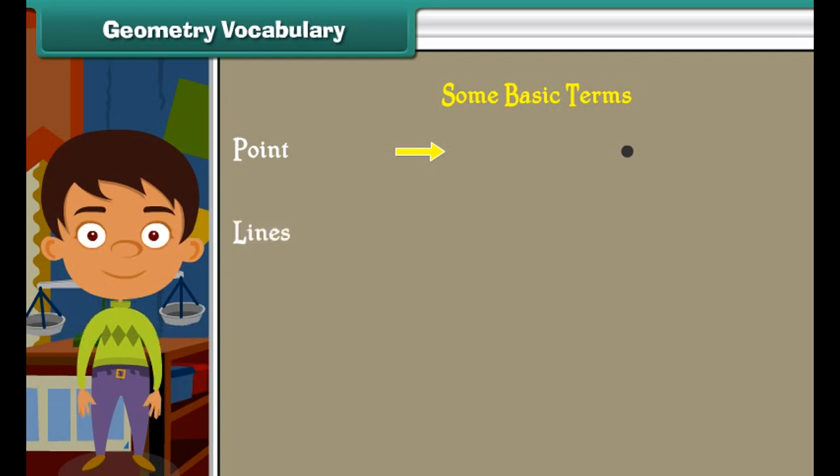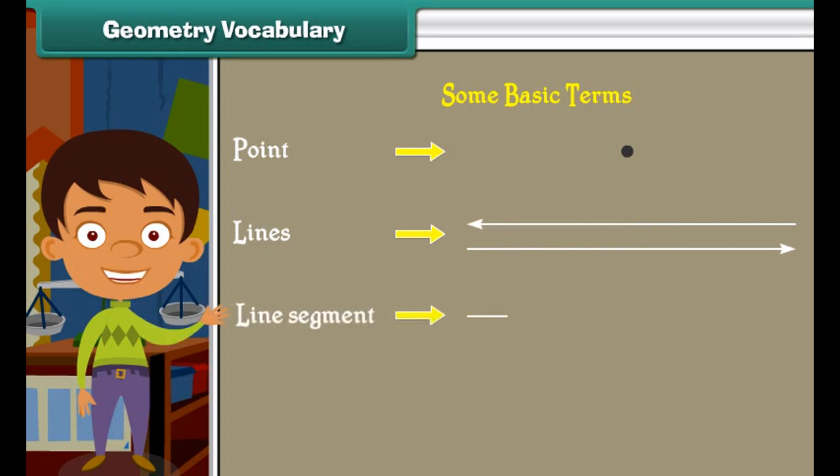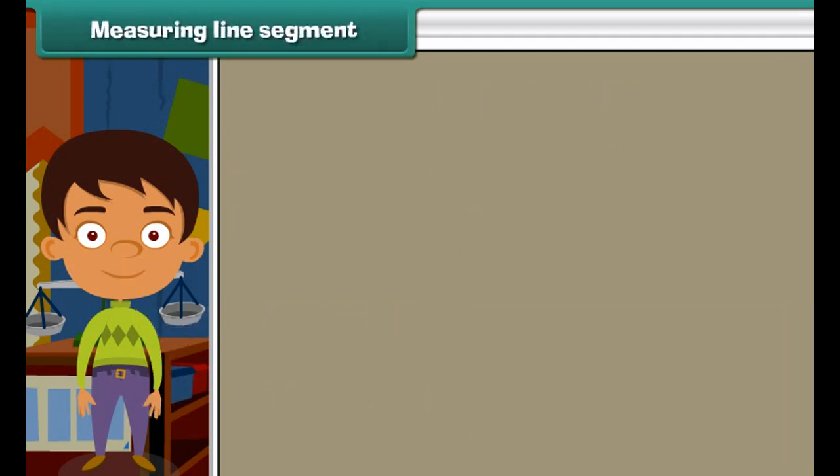Geometry vocabulary. Let us know about some basic terms used in geometry. Point: it is an imaginary dot. Lines: all these are straight lines. Line segment: part of a line is called a line segment. Here AB is a line segment. These are the curved lines.